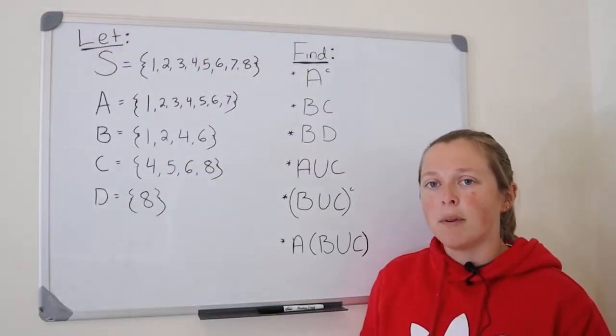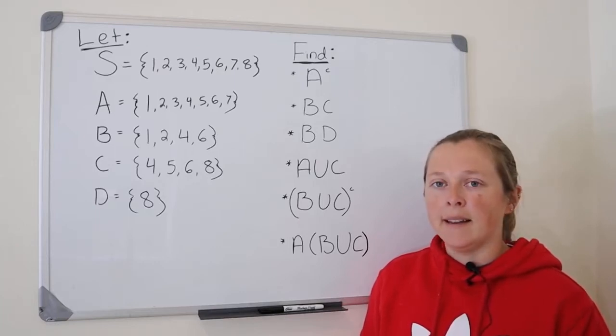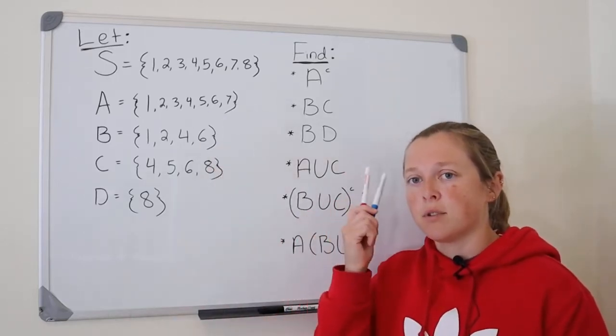I just want to take a few moments to talk about some set notation that you'll see in an introduction to probability theory type course. So first I have some definitions, and then I have some things that I'm trying to find.